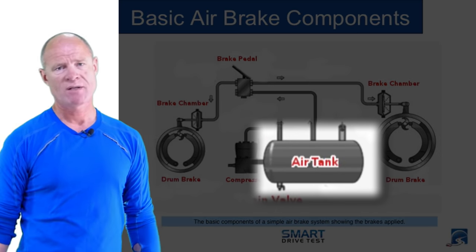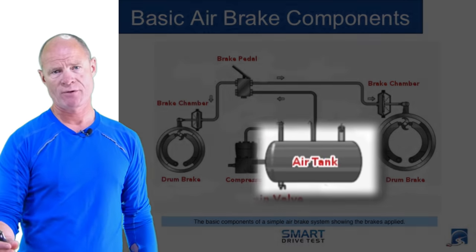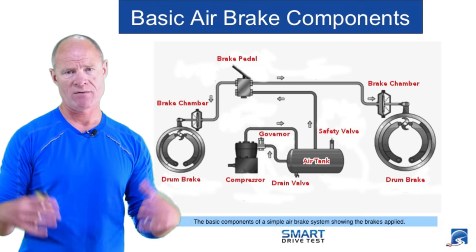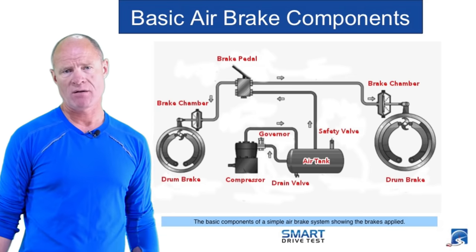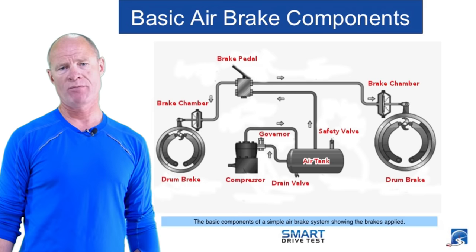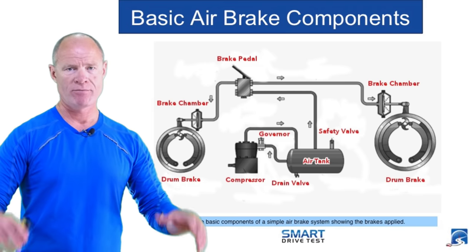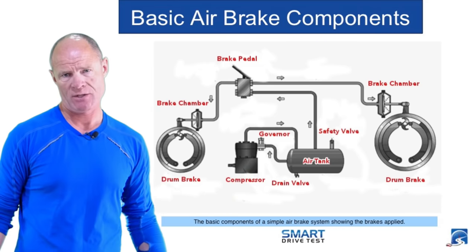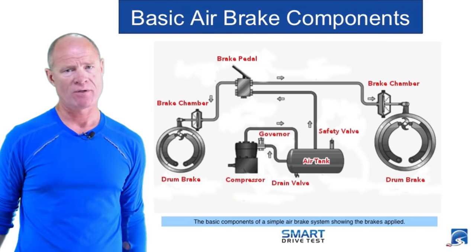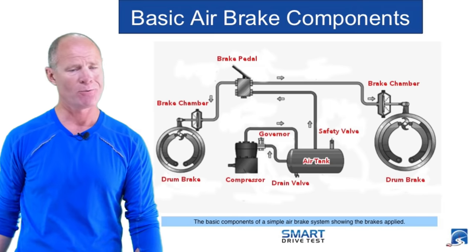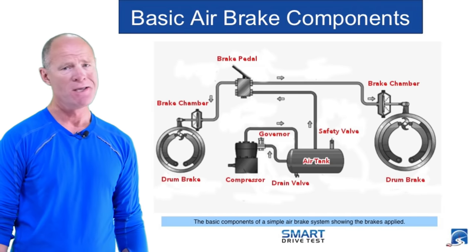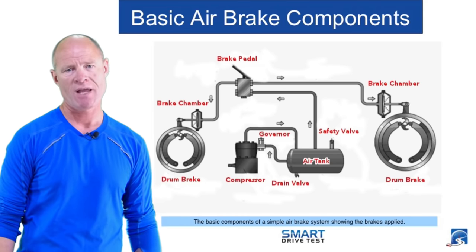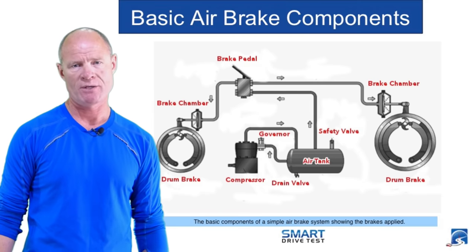We also have to have air tanks to store the air. This is one of the first fail-safe systems in any air brake equipped vehicle — air tanks. All of the air tanks on these air brake equipped vehicles are capable of holding 10 to 12 full brake applications — that volume of air. So if the compressor falls off the side of the vehicle for whatever reason, there's enough air stored in those air tanks for 10 to 12 full brake applications.